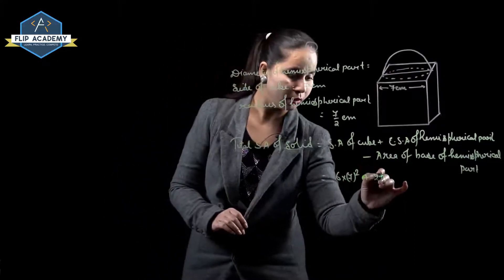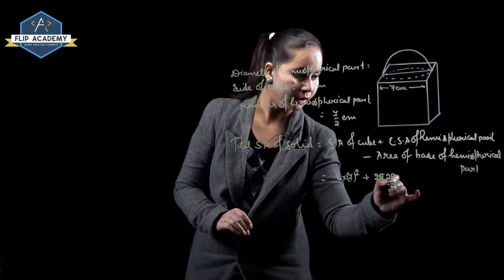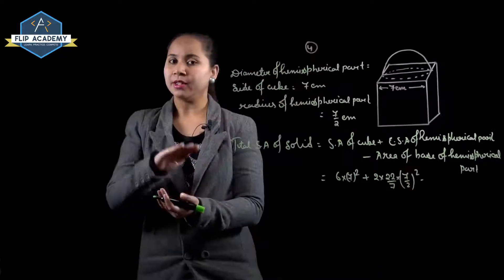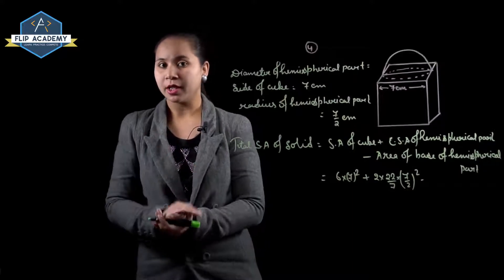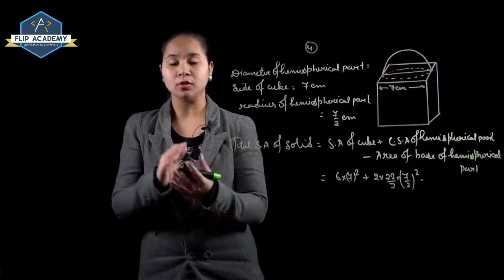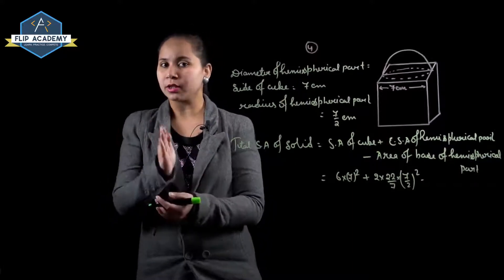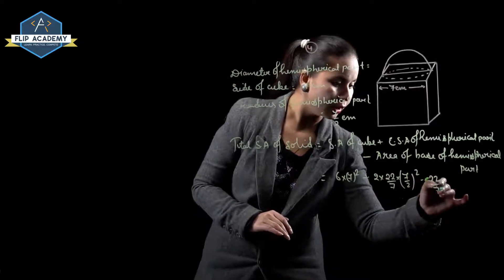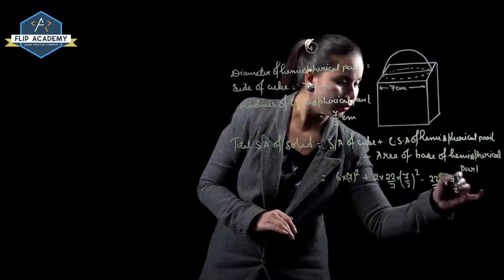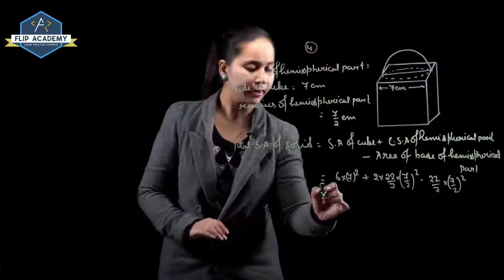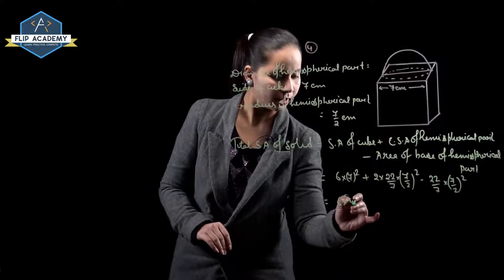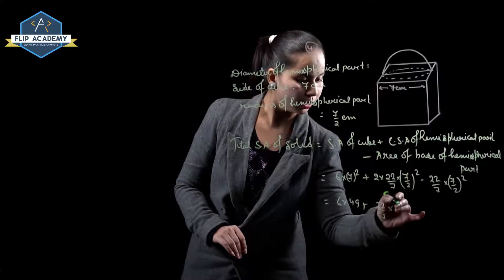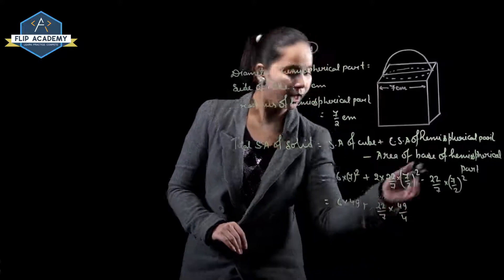So 2 into 22 upon 7 into r squared, where r is 7 upon 2 whole squared, minus area of base of hemispherical part, which is pi r squared, giving pi into 7 upon 2 whole squared. This gives us 6 into 49 plus 22 upon 7 into 49 upon 4.